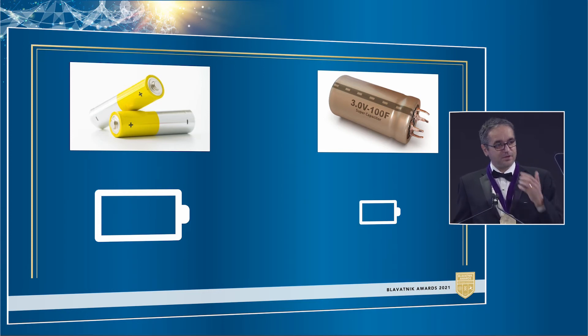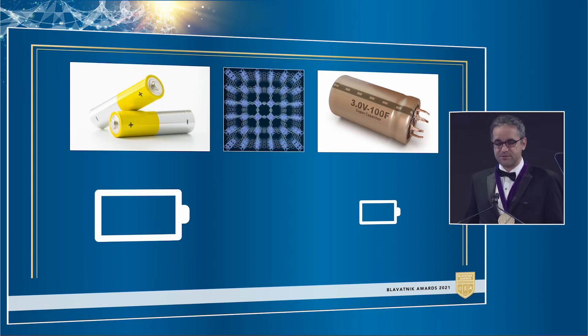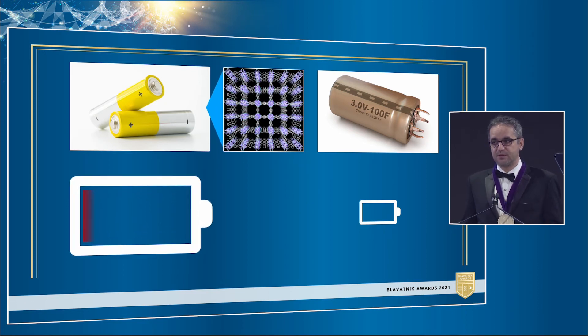Now, one way to improve both batteries and supercapacitors is to increase their internal surface area. The more surface area, the more energy you can store. Now that we have conducting MOFs, we can use their huge surface area on these devices. Putting MOFs in batteries, something we've done, can greatly increase their capacity, but this still doesn't solve the problem of slow charging and discharging.